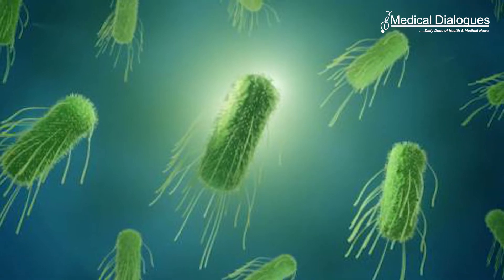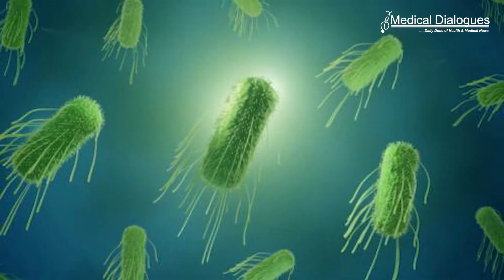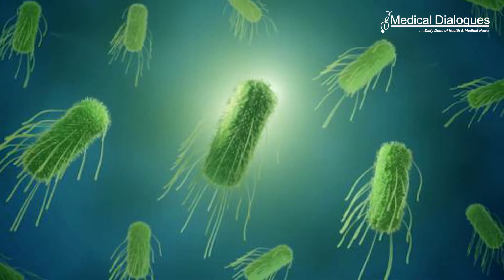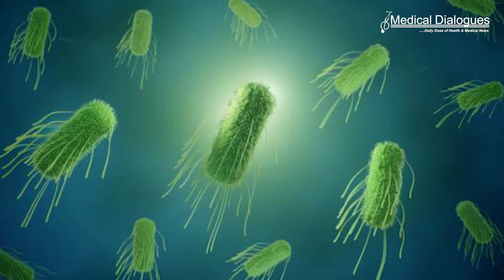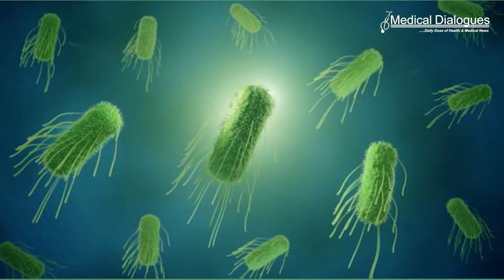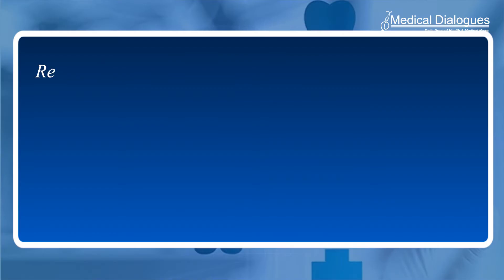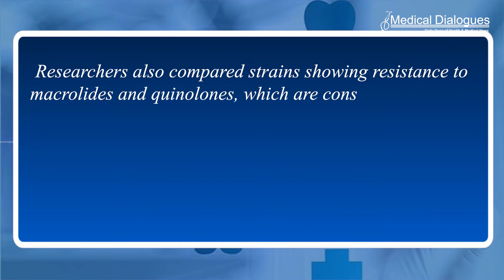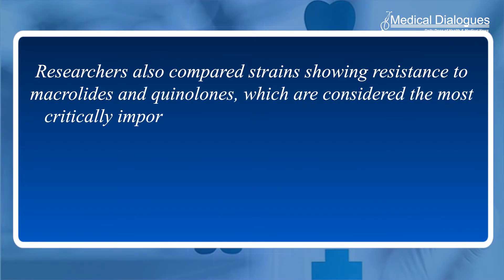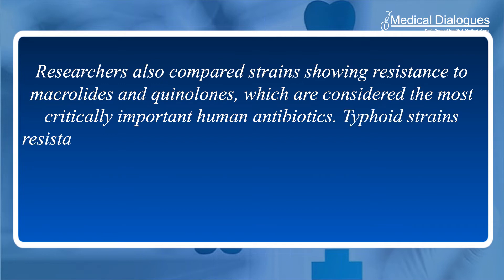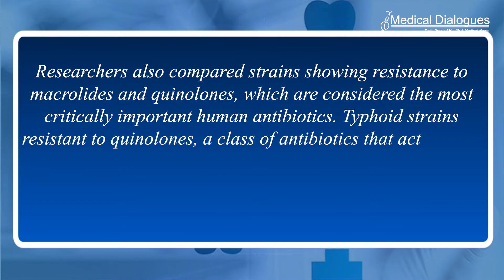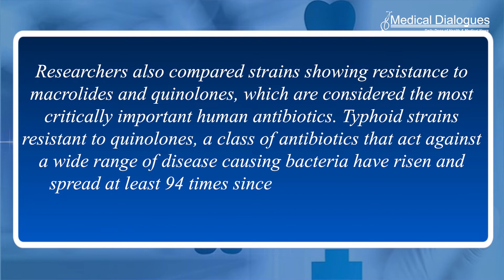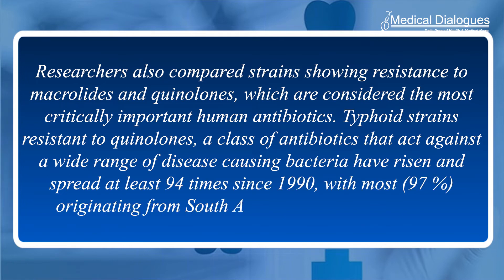Findings show that resistant S. typhi strains have spread between countries at least 197 times since 1990, with strains most frequently originating in South Asia and Southeast Asia, East and Southern Africa, and spreading to countries including the United States, the UK, and Canada. Typhoid strains resistant to quinolones — a class of antibiotics that act against a wide range of disease-causing bacteria — have risen and spread at least 94 times since 1990, with 97% originating from South Asia.